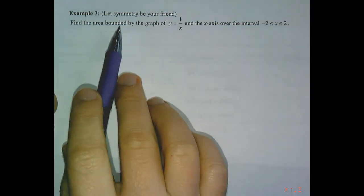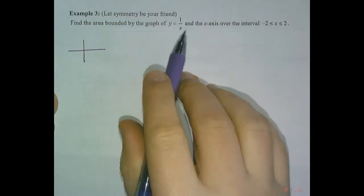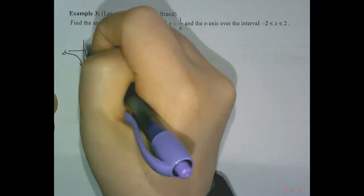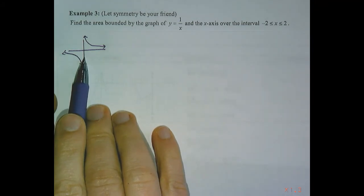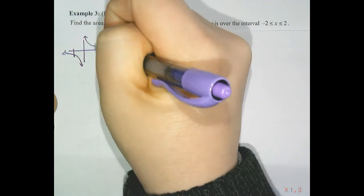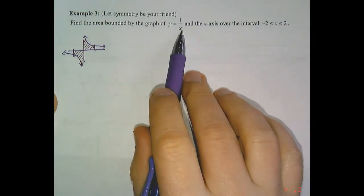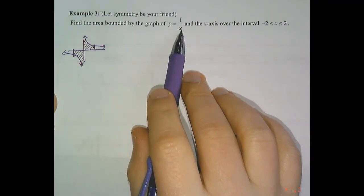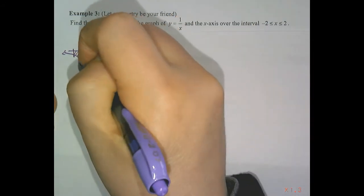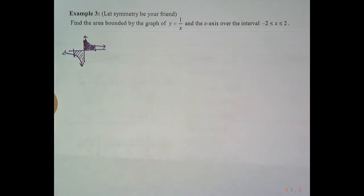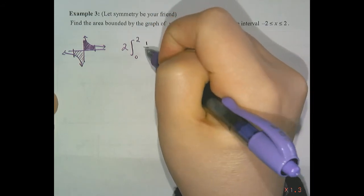In example three, we're finding the area bounded by y equals 1/x and the x-axis from negative 2 to 2. Sketching 1/x gives the reciprocal function with a vertical asymptote at zero. Because this is an odd function with symmetry, we can consider two of the same region, setting up the improper integral as two times the integral from 0 to 2 of 1/x dx. This is improper at x equals zero due to the vertical asymptote.